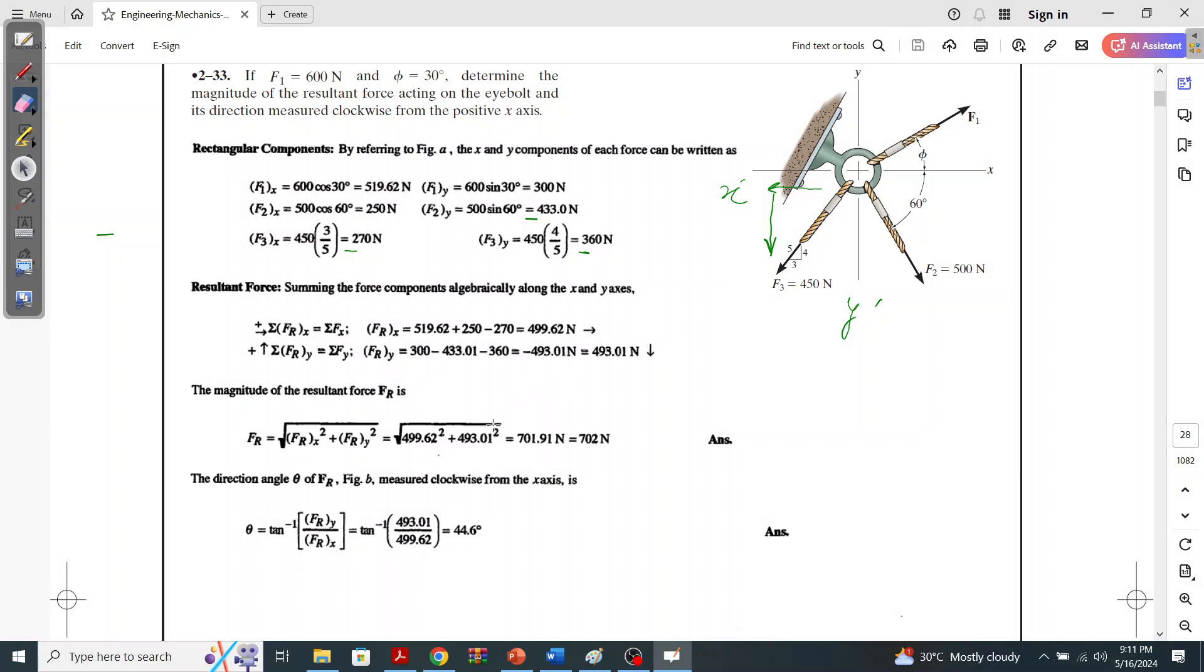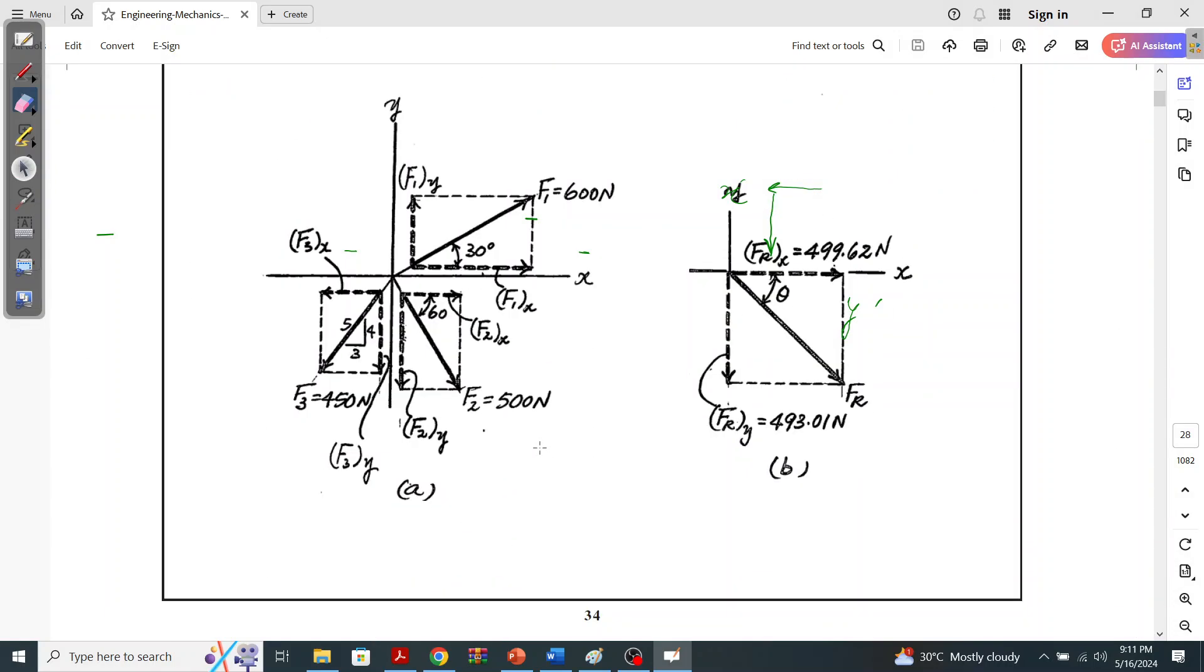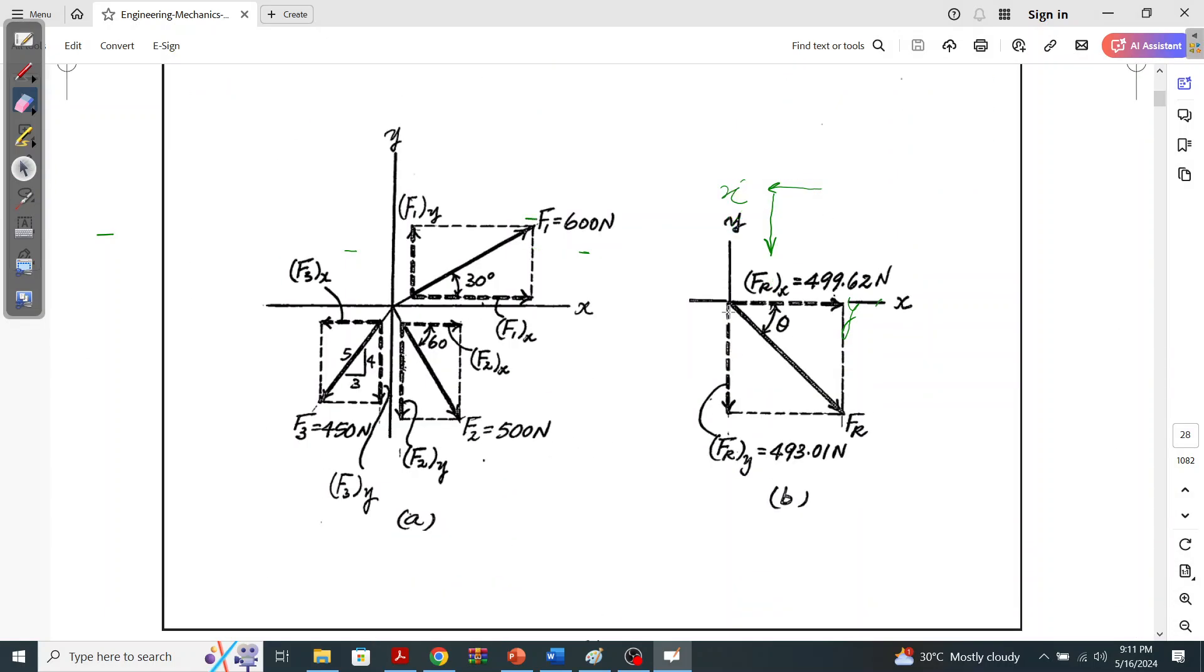And if you look at it here, he has drawn it for you guys. He has drawn it, and you can very easily see that this is your FRx, 500 Newtons, and this is your FRy. This is the resultant, and this angle is 44.63 degrees as we calculated it, and that is how he has solved this problem.